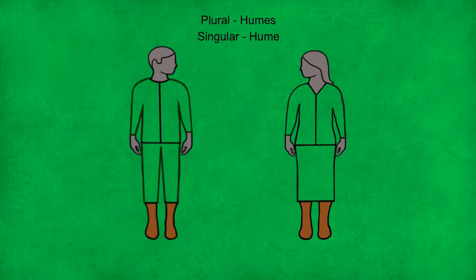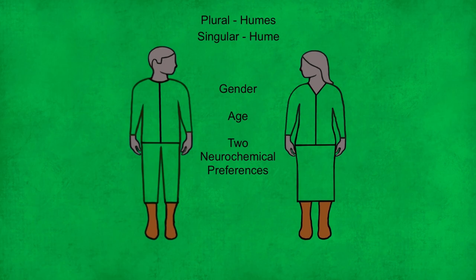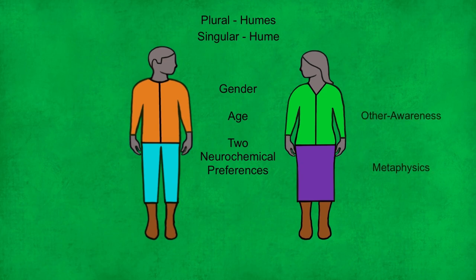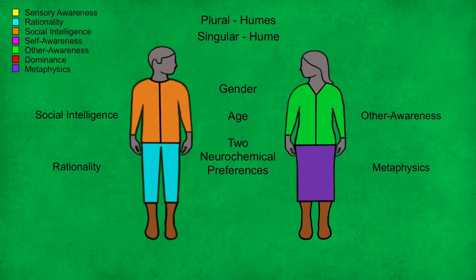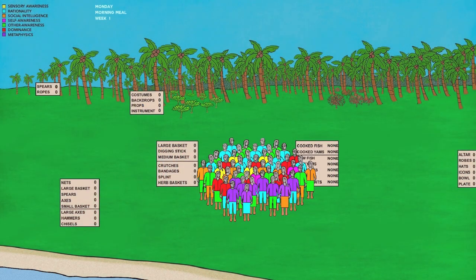Each Hume has a number of characteristics: they have a gender, an age, and importantly, the first two neurochemical preferences of their brains are represented by the colour of the clothing they wear. The colour of their top represents their first neurochemical preference, and their lower piece of clothing represents their second preference. For example, this female Hume has a first preference for other awareness and a second preference for metaphysics. And this male has a first preference for social intelligence and a second preference for rationality.